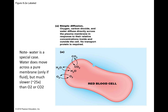In simple diffusion, you can have things move across the membrane — for example, oxygen, carbon dioxide, and water can diffuse across the membrane without a transporter, but water is a special case. We're going to talk about that. Water is greatly facilitated by movement through a protein. But CO2 and oxygen move across the red blood cell membrane just according to concentration gradients.